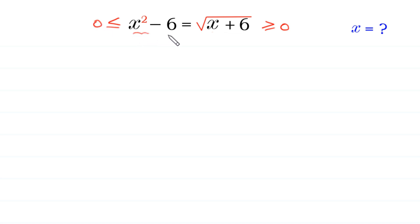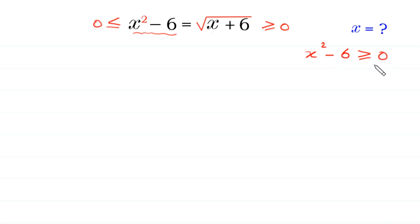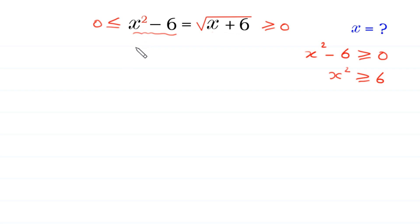x squared minus 6 must be greater than or equal to 0. If we move this negative 6 to the right side, then x squared must be greater than or equal to 6. This is the condition for checking the values of x. So, let's start by squaring both sides of this equation.